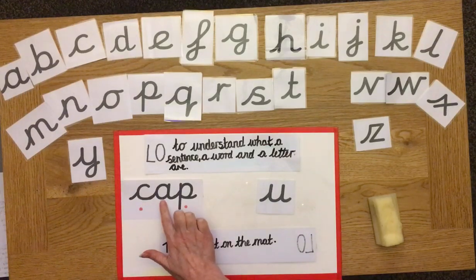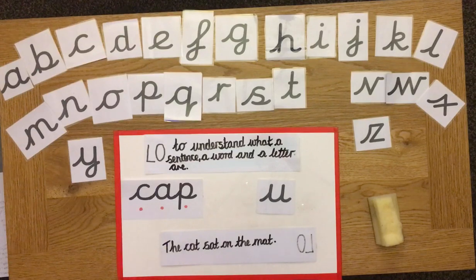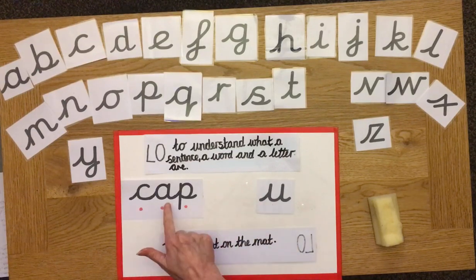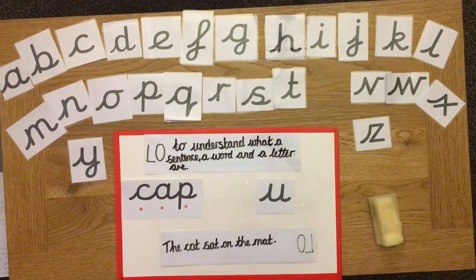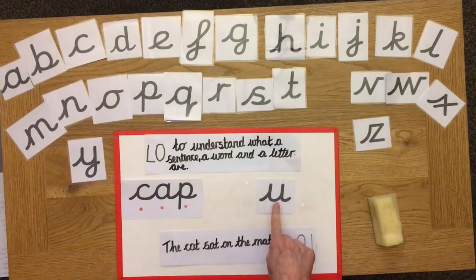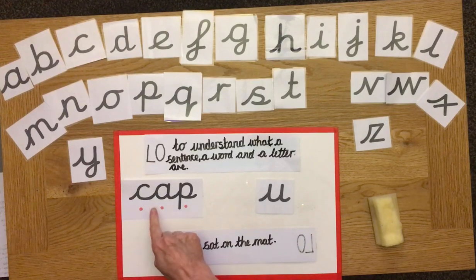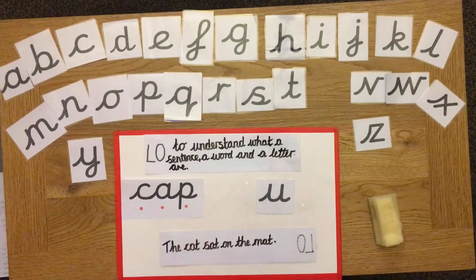This has three letters in it. So, this is a letter, this is a word, and this is a sentence. A sentence is lots of words together. Inside a word are letters, and inside a sentence are words.